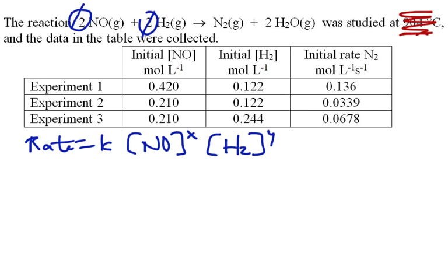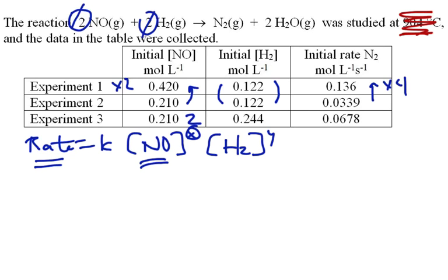We want a situation where one chemical does not change and the other does. Looking at experiments 1 and 2, the [NO] has doubled while [H₂] stays the same. Taking 0.136 divided by 0.0399 gives approximately 4 times. So if I double the concentration of NO, the rate doesn't just double — it quadruples. That means the exponent X must be 2. This reaction is second order with respect to NO, because doubling the concentration quadrupled the rate — there's a square on it.